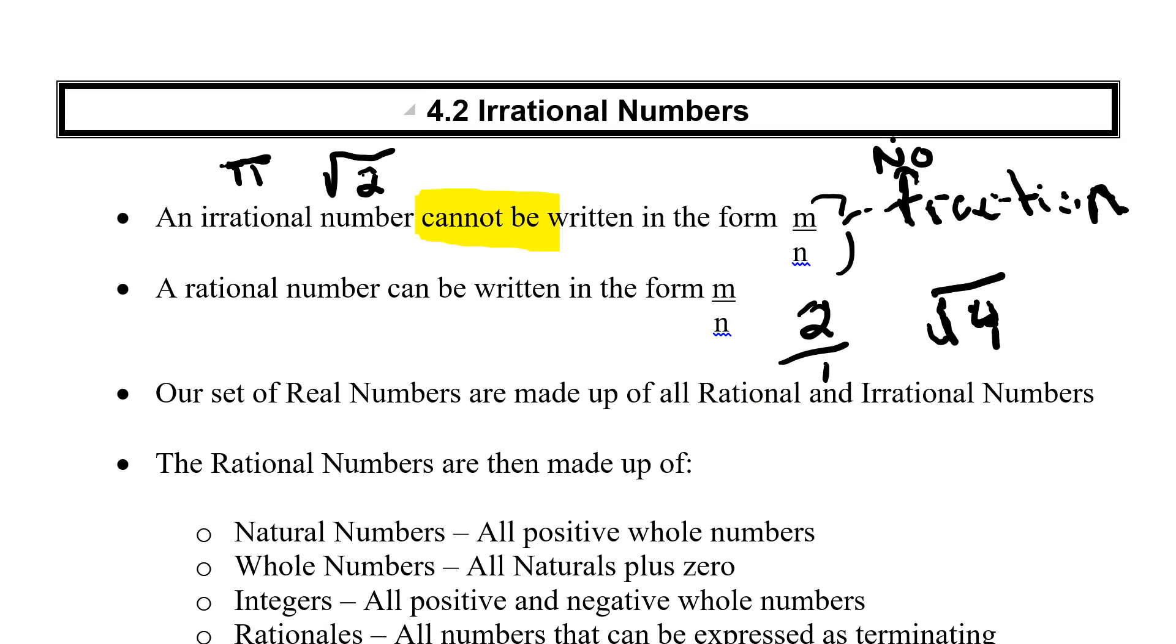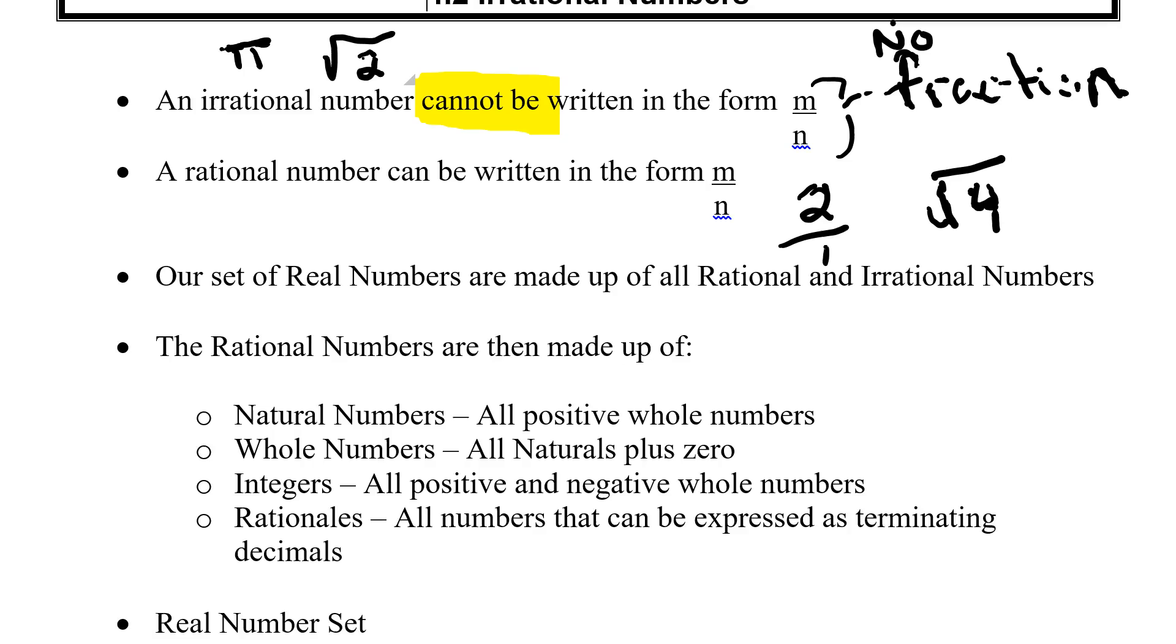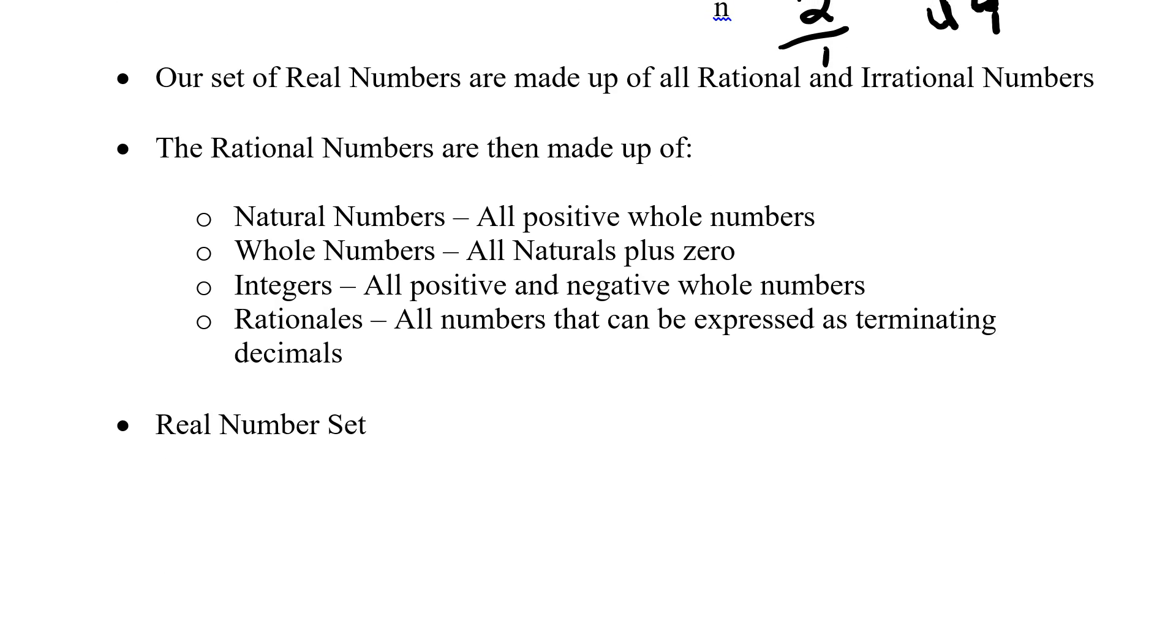But the rationals can be broken down even further. So in our rational numbers, we can break them down into naturals. Now, natural numbers will be everything that's positive and everything that's a whole number. So we're not talking about decimals here. We're not talking about fractions here. So for a number to be natural, it has to be positive and it has to be no decimals.